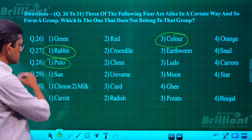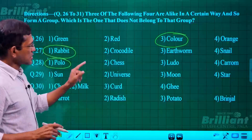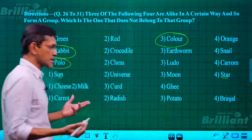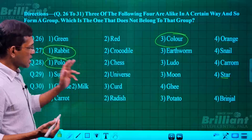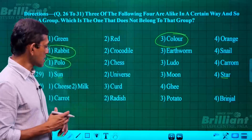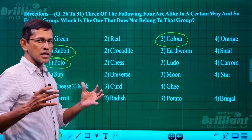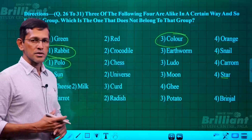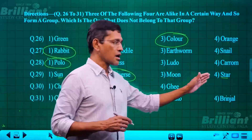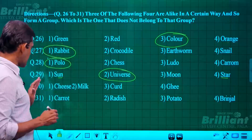Next: sun, universe, moon, and star. Sun is a star, and star belongs to that same category. Moon is a satellite, so it doesn't fit either. Universe contains all these celestial bodies — it's the most different. So the answer is universe. Universe is different from sun, moon, and star, which are all celestial/terrestrial bodies.